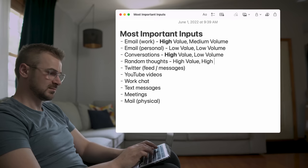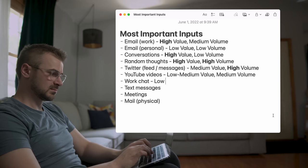As you come up with your list, try to rate each one in terms of two things: its value and its volume. For its value, label it as high value, medium value, or low value. And same thing with volume — is it a high volume input, medium volume input, or low volume input? And if you don't know the answer to those right away, just keep this note you've just created open throughout just one or two days.